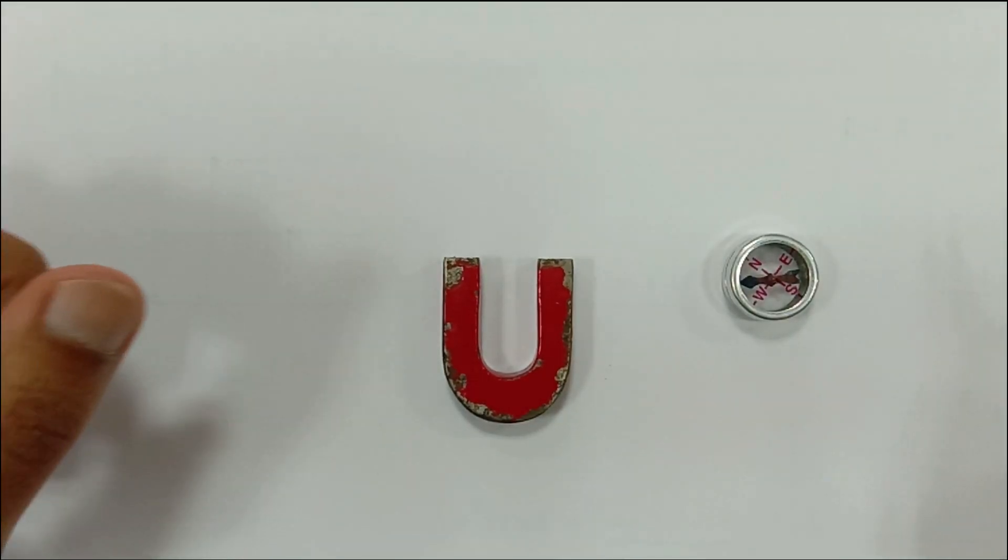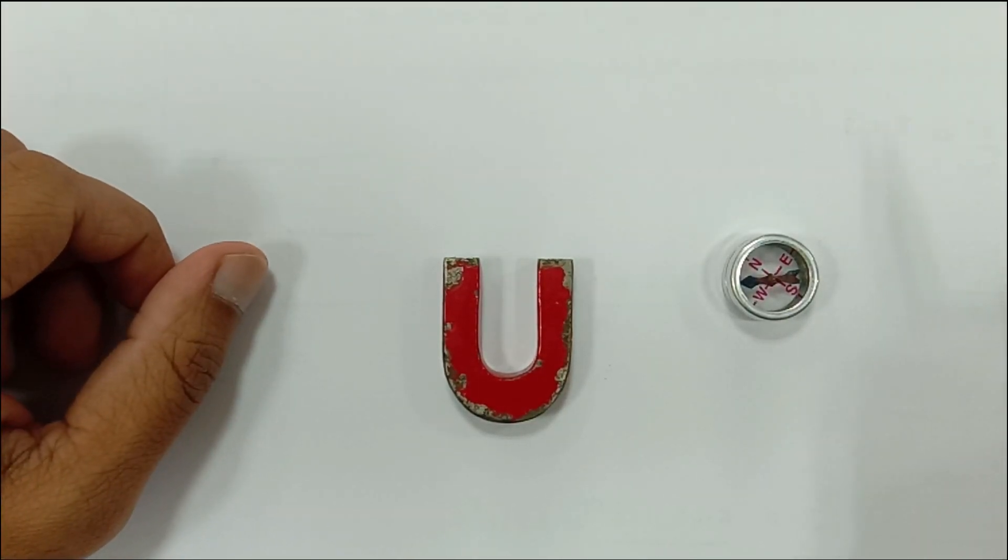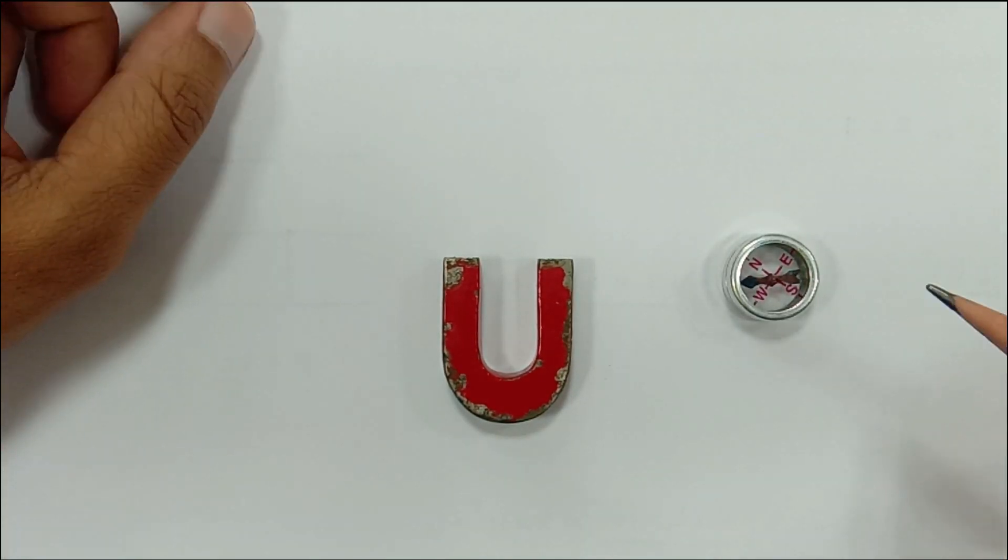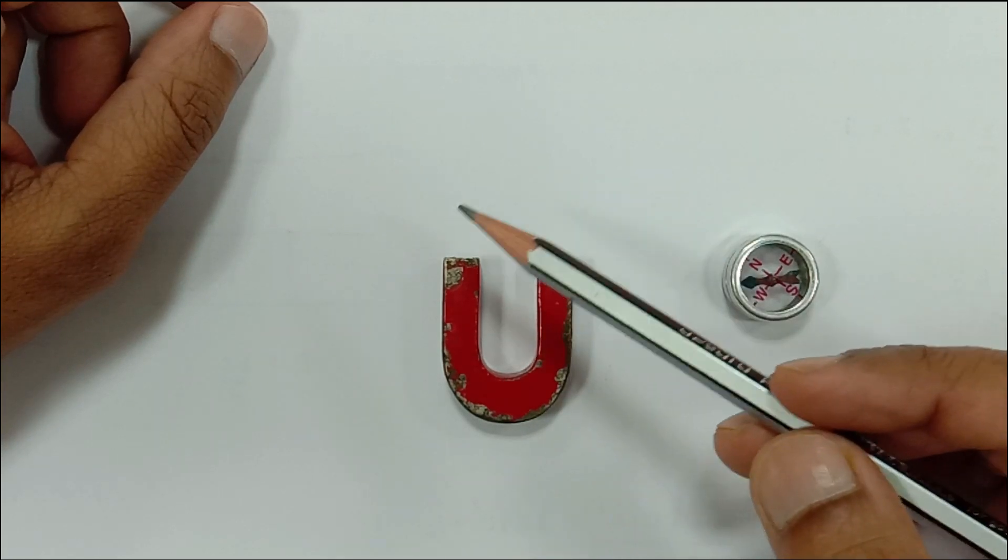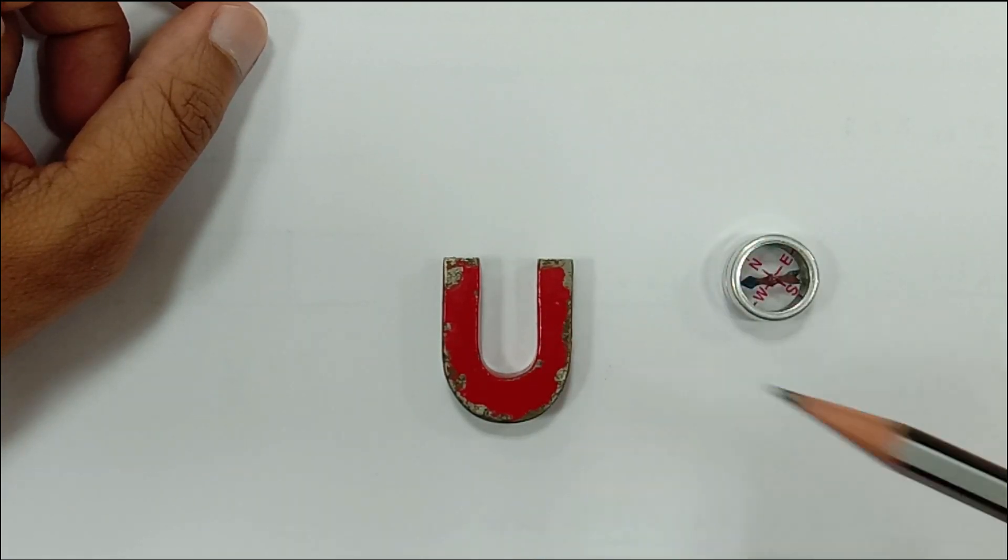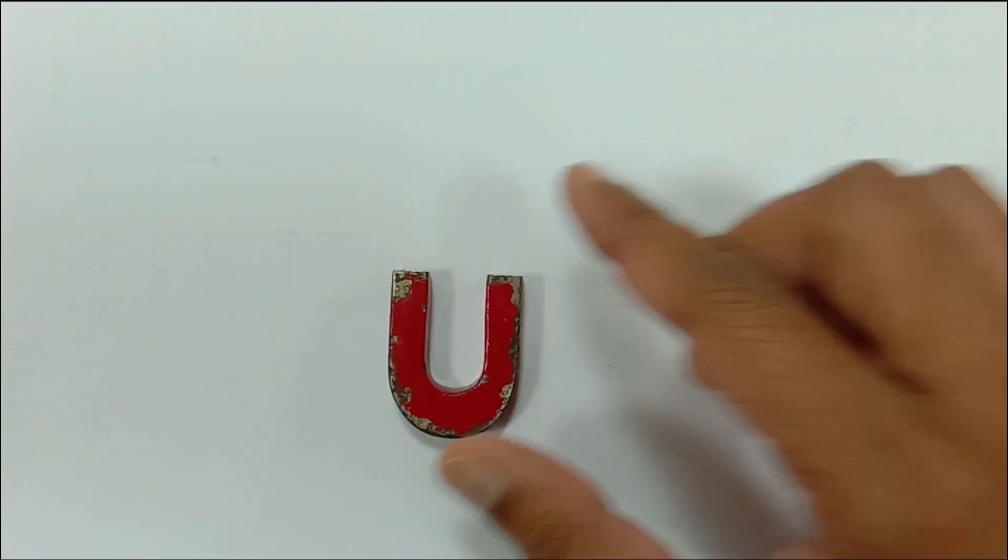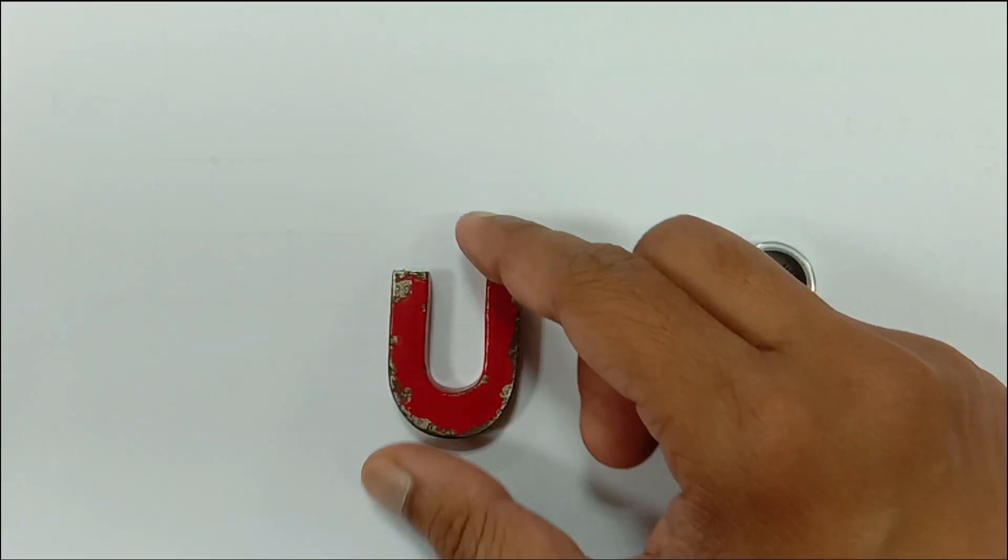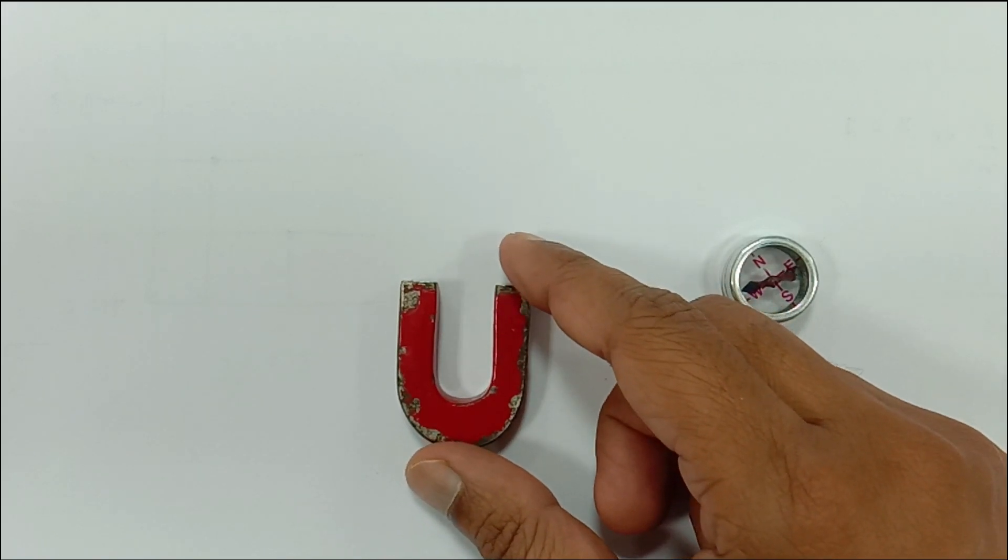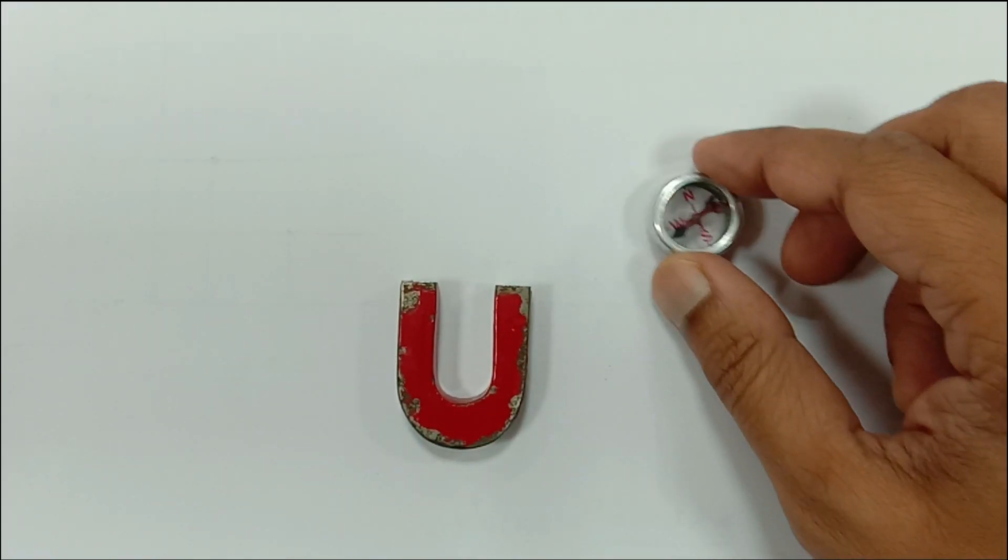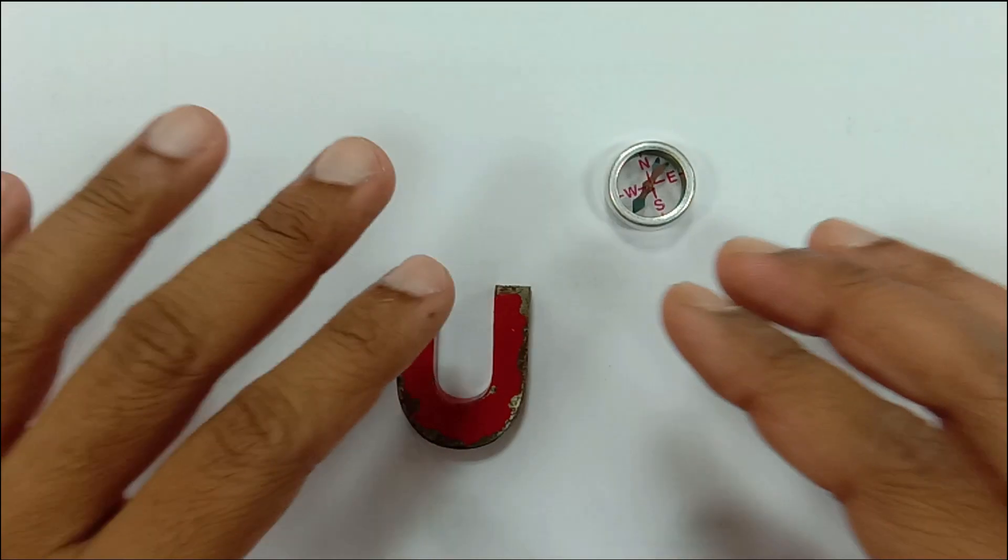Hello scientific brilliant people, how are you today? So today I'm going to demonstrate a very interesting experiment related to magnetism and I'm going to plot the magnetic field lines around the U-shaped magnet. So I have a horseshoe type of U-shaped magnet and here is a compass.